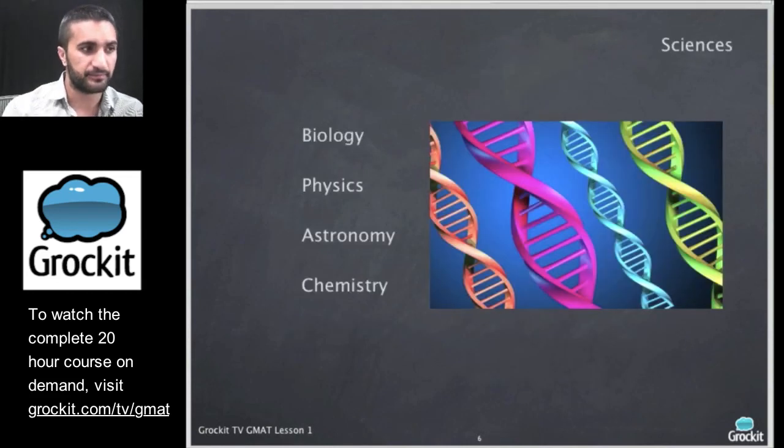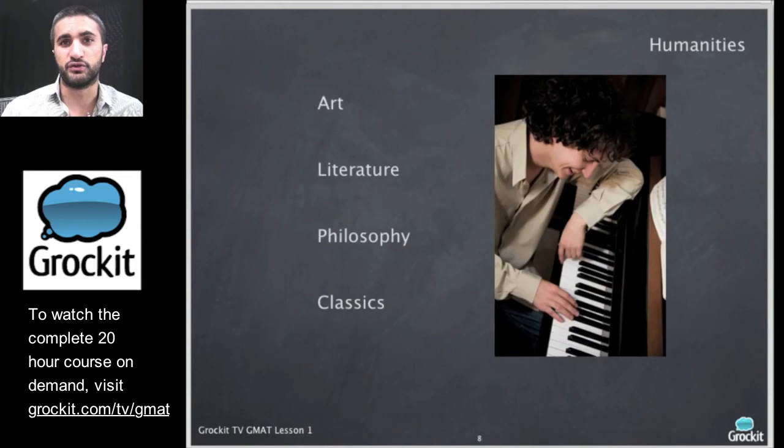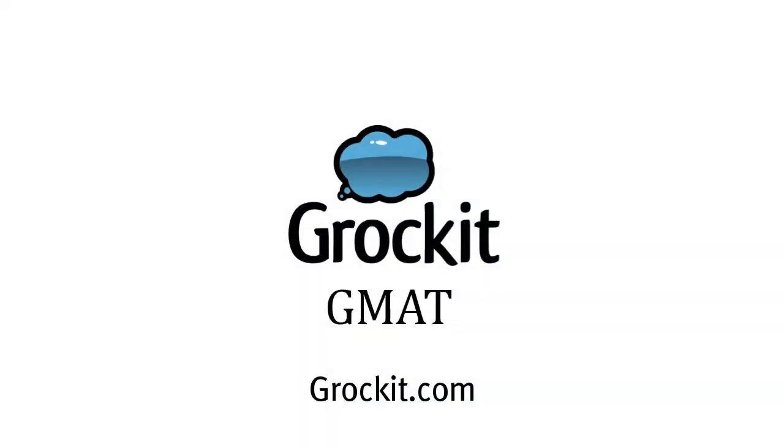So, the next type are science passages. And unlike social science passages, science passages we are talking about the hard sciences, biology, physics, astronomy, and chemistry. And then in the humanities, that's the third type. Things like art, literature, philosophy, the classics. You could see excerpts from literary pieces in the humanities style passages.